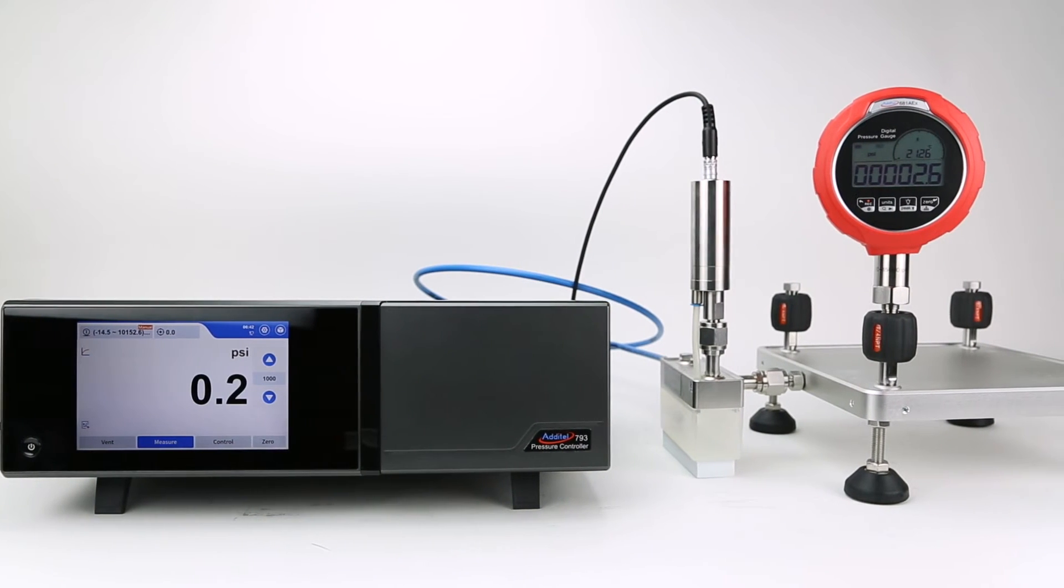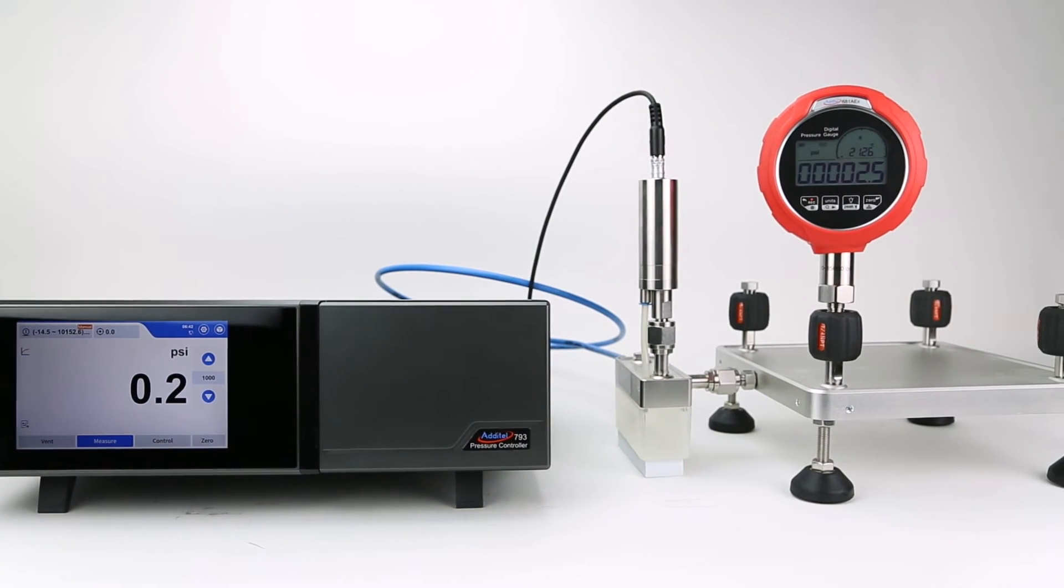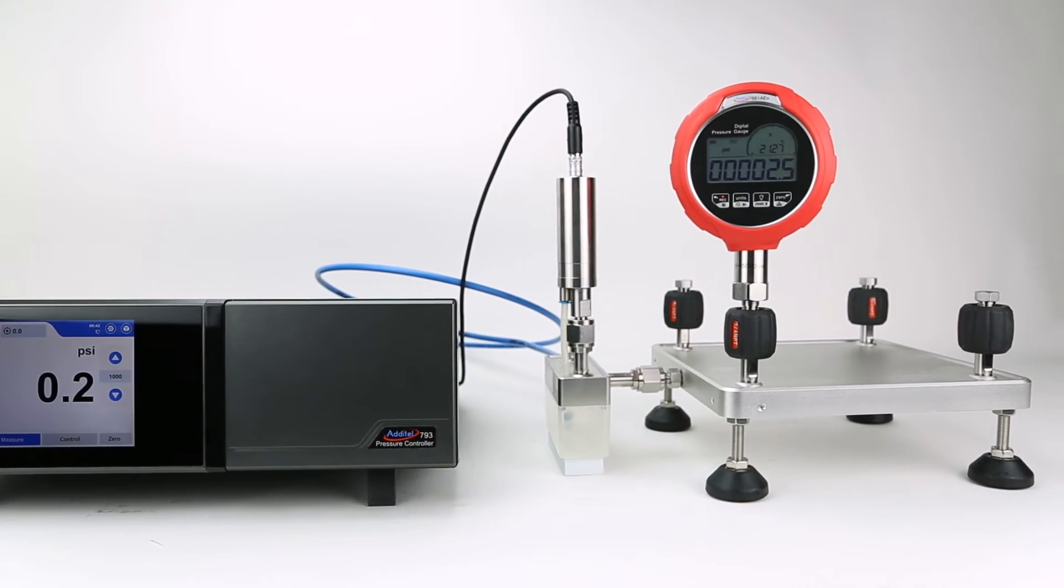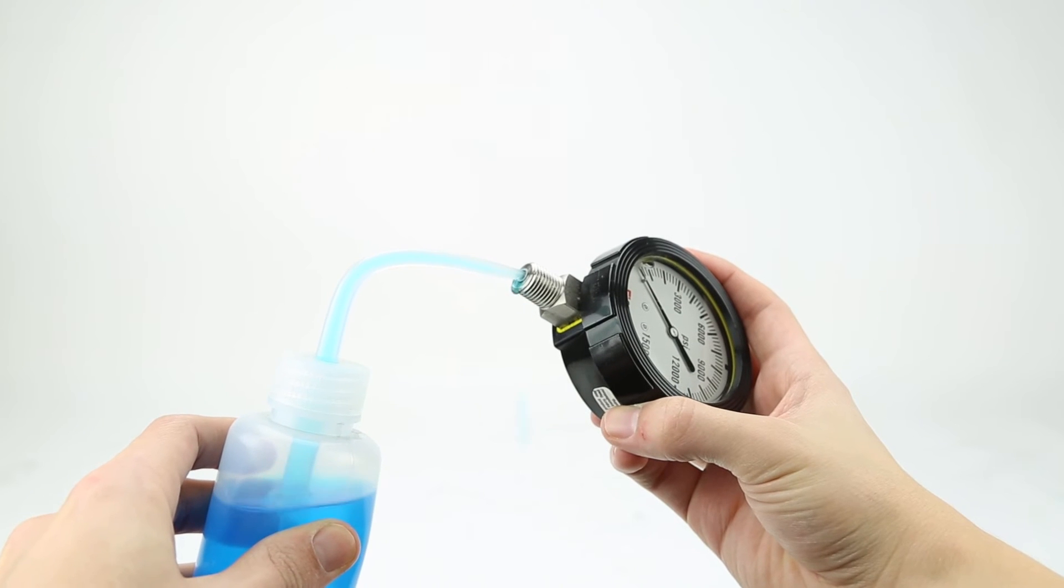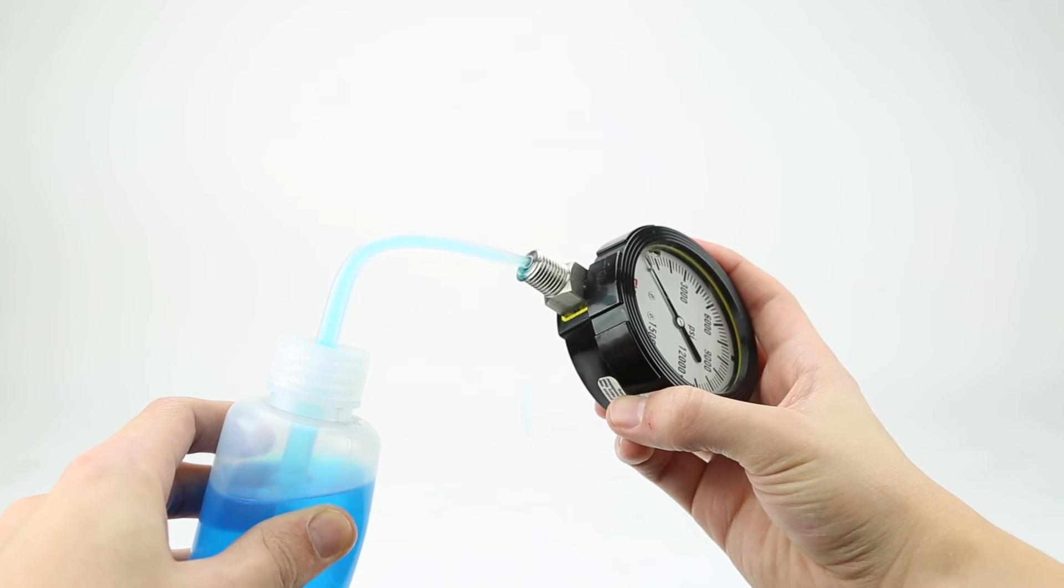The contamination prevention system will now automatically purge any contaminated fluid from your device under test. This can be demonstrated using a pressure gauge that has been injected with a blue color dye to simulate contaminated media.